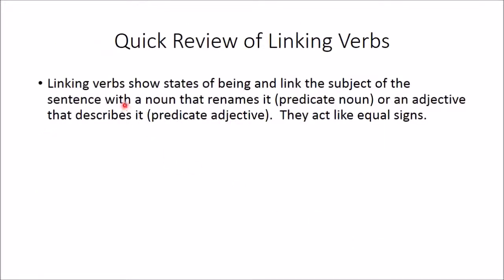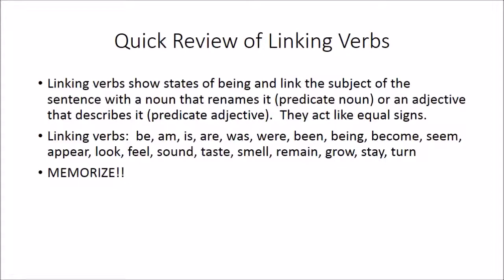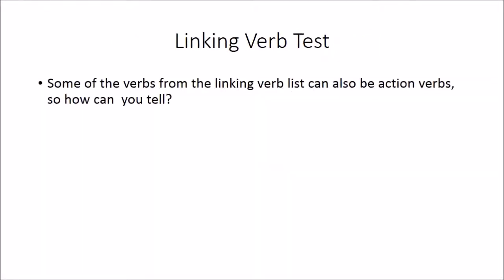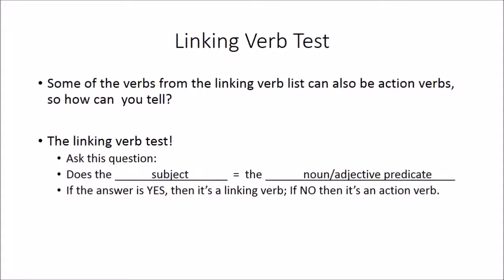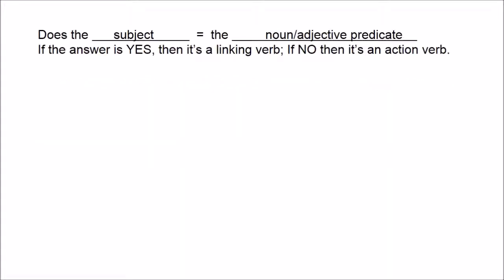Quick review of linking verbs: linking verbs show states of being and they link the subject to a noun that renames it — the predicate noun — or to an adjective that describes it — the predicate adjective. Linking verbs act like equal signs. Now, to tell if a verb is a linking verb or an action verb, there is a test: does the subject of the sentence equal the predicate noun or predicate adjective? If yes, it's a linking verb. If no, it's an action verb.